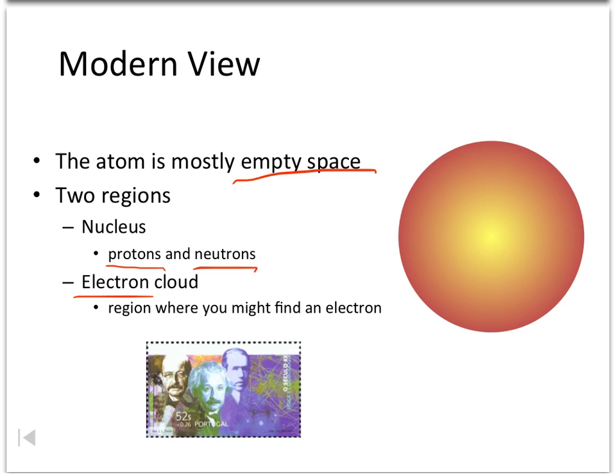In the middle of the atom, there's a region called the nucleus. That nucleus is made up of particles called protons and neutrons, which we're going to talk more about later.